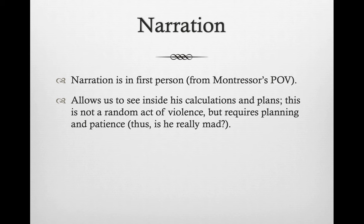We see that this is not a random act of violence — it requires planning and patience to get Fortunato down into the catacombs. We can tell he's been plotting this for a while. So the question becomes: is Montresor actually mad? The central thematic question of this story is whether he is actually crazy or whether it's all sort of an act.